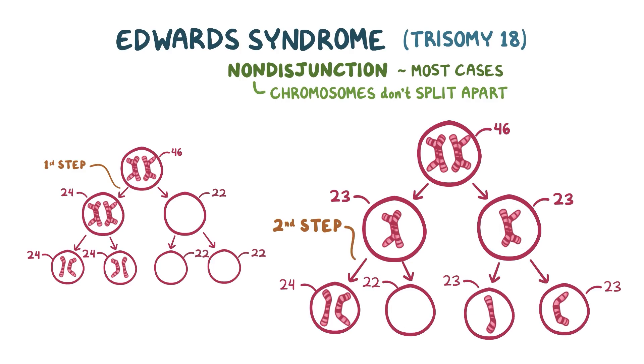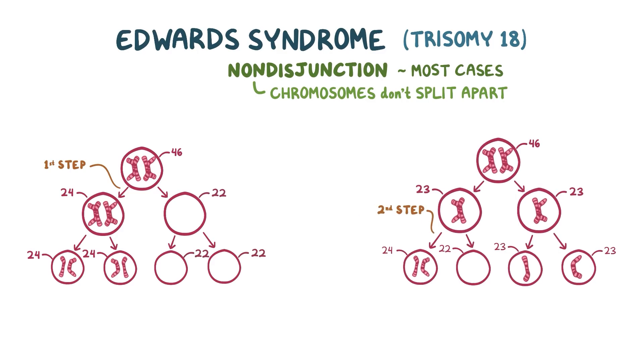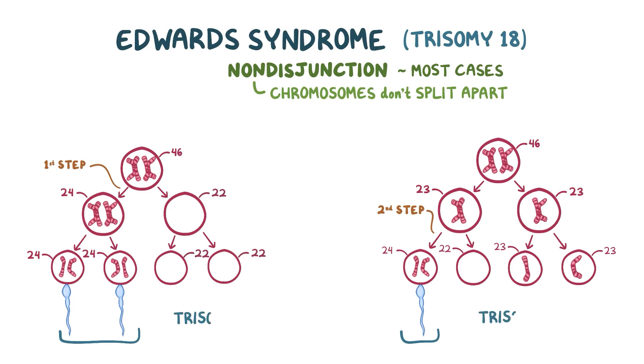If a sperm cell combines with any of these that have a duplicate of chromosome 18, then the combined cell will have three chromosome 18s, or trisomy 18.